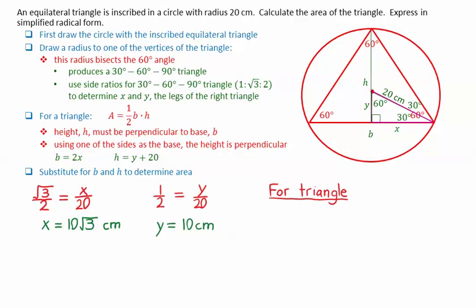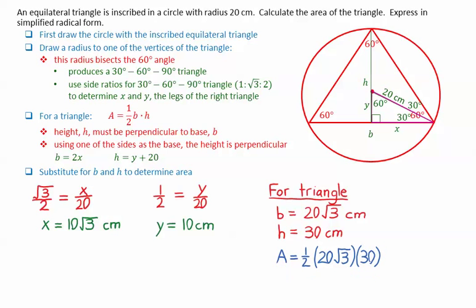Then, for the triangle, the base equals 20√3 — which is double the value of x — and the height equals 30 centimeters (10 plus 20). Substituting into the area formula: one-half times 20√3 times 30. This gives an area of 300√3 centimeters squared.